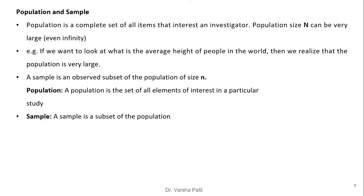An important concept in statistics is the distinction between population and sample. A population is the complete enumerated set of all items that interest an investigator; its size (capital N) can be very large, even infinite. For example, measuring the average height of all people in the world is not feasible, which is why we depend on sampling. A sample is an observed subset of the population of size small n. A population is all elements of interest in a study, while a sample is a subset of the population.